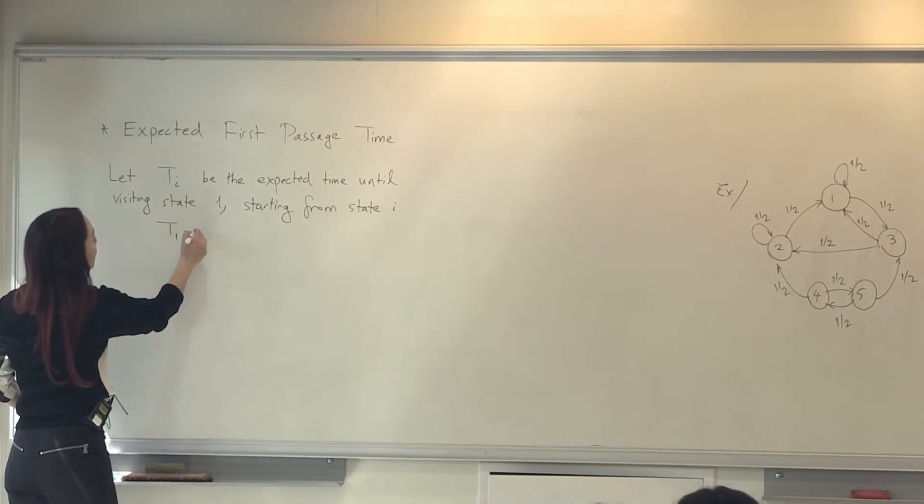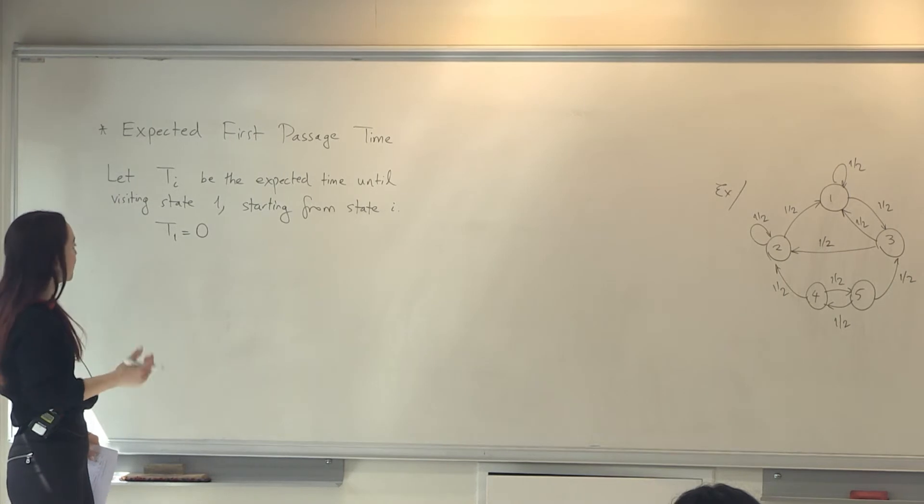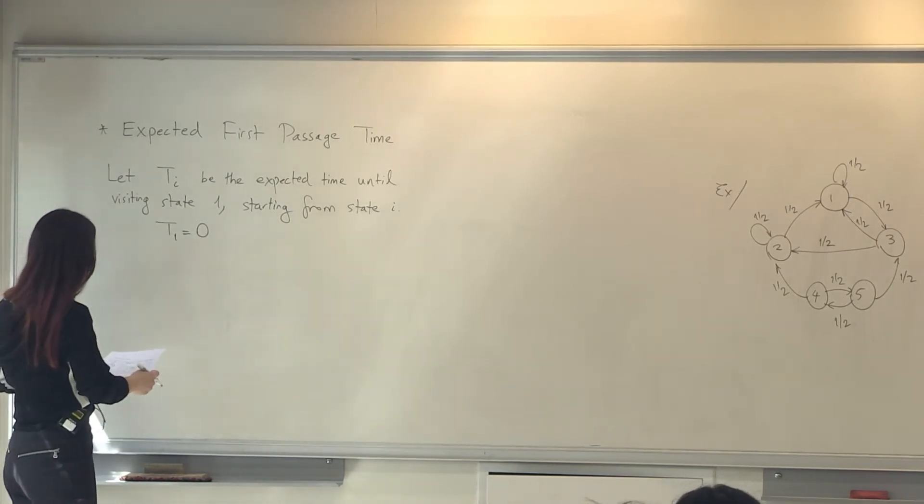So clearly, T1 is 0, right? If we are in 0, the number of transitions until we visit is 0.